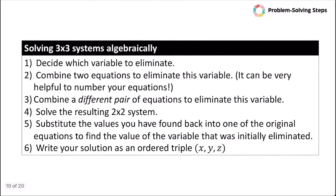Here are our steps. First, decide which variable to eliminate — X, Y, or Z. Pick two equations from your system and use them to eliminate that variable. It's helpful to number your equations. Then take two different equations and eliminate the same variable. The two new equations create a two-by-two system to find the values of two variables. Substitute those values back into one of the original equations to find the eliminated variable. Finally, write your solution as an ordered triple.